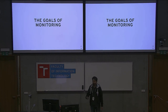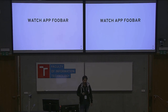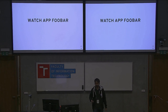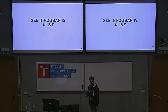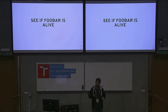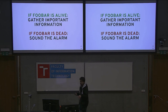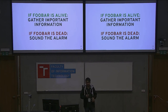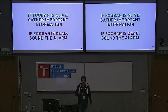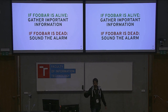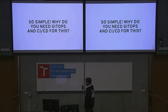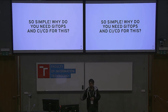What are the goals of monitoring? Someone said health checks. In monitoring, we want to watch an app — let's say there's an app called FUBAR. We want to see if the app is alive, meaning it is healthy, it is serving requests, it is doing what you intend it to do. If it is alive, gather some information, store the data in a persistent data store so that you can look at those nice Grafana dashboards later. And if the app is dead, just sound the alarm, have someone look at it, run your reconcile loop, have your AI ops do the magic.